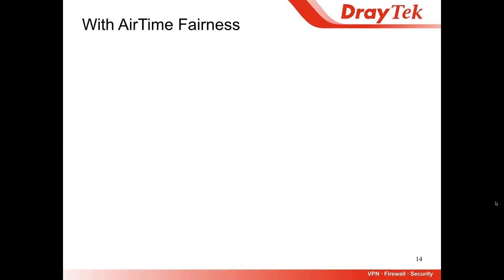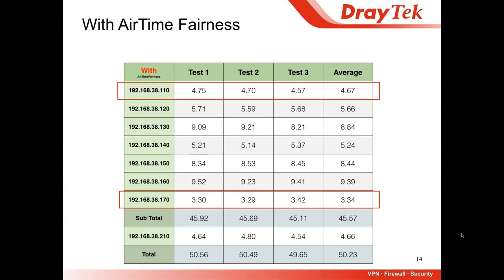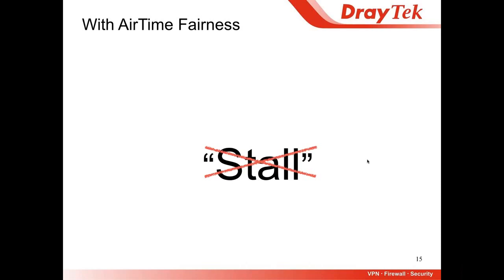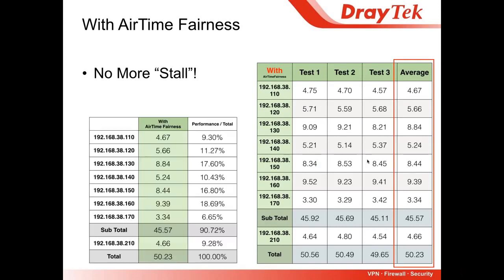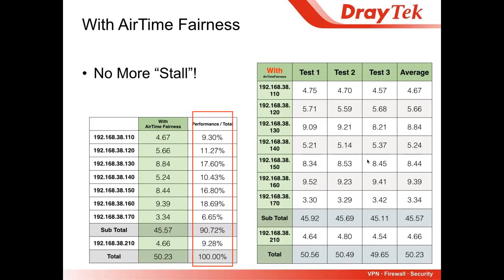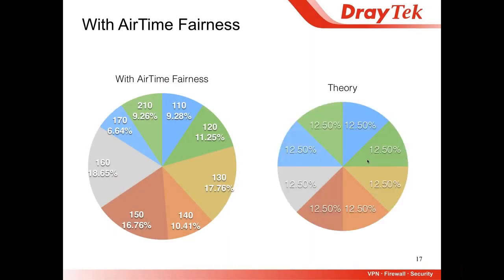Then we enable Airtime Fairness. Again, we test three times, and we can see that stations 110 and 170 got improved. With this kind of performance, we can say they won't feel the stall anymore when watching high-quality video on YouTube. Based on the average numbers, we count the performance ratio and draw the pie chart again. Compared to theory, we are getting closer now. Stations 110 and 170 got more airtime, while 120 and 130 got decreased. Overall, we are getting closer to the theory.